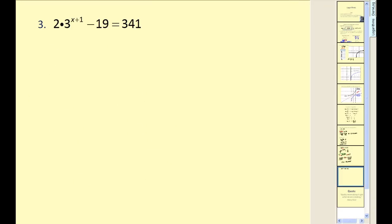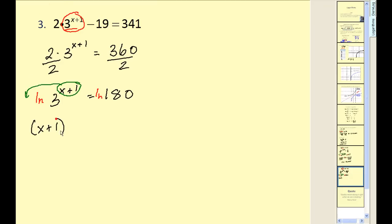Let's take a look at number three. Again, the first step is going to be to isolate the exponential part. That's this part here. So we're going to add 19 to both sides. 341 plus 19 would be 360. And we're going to divide by two. Let's go ahead and take the natural log of both sides. Again, I could take the common log, but I'm in the habit of taking the natural log. Apply the power property. So we'd have x plus one times natural log three is equal to natural log 180.